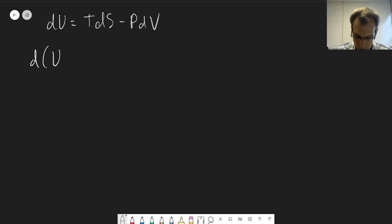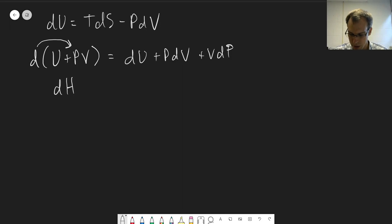So we can start here with the definition of enthalpy. What's du plus pv? Well that's dh. But we can also write that out as du plus pdv plus vdp. So we're just applying a derivative to a product, and so we use the product rule here.